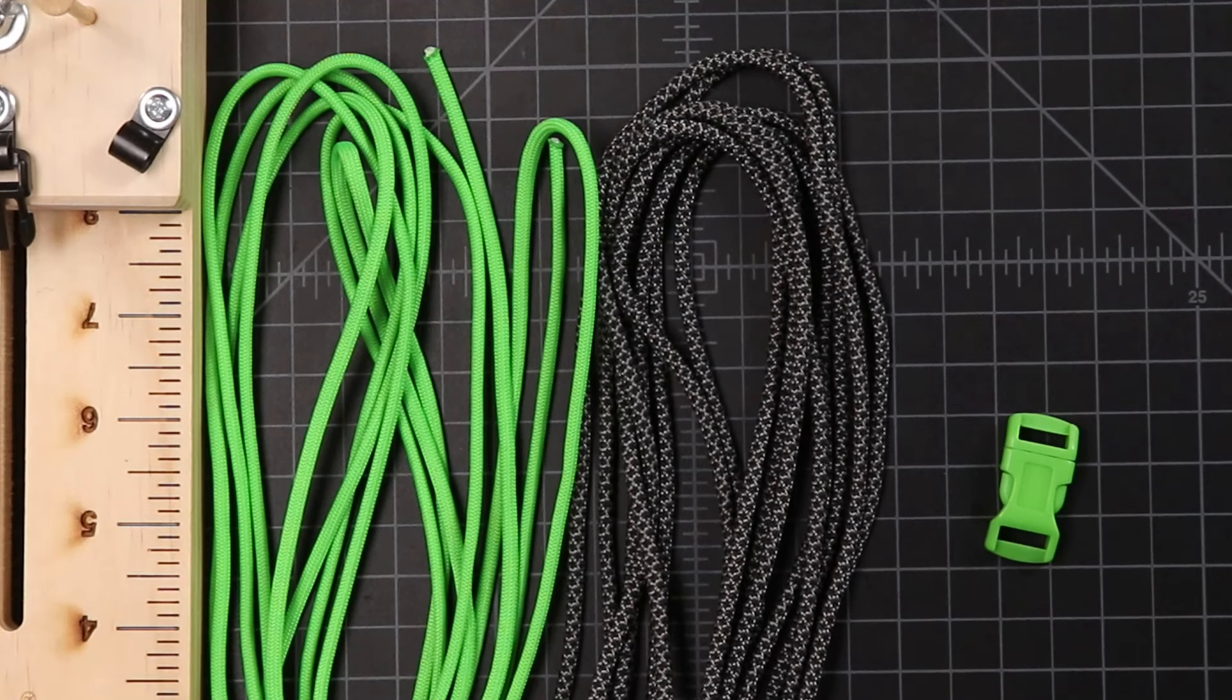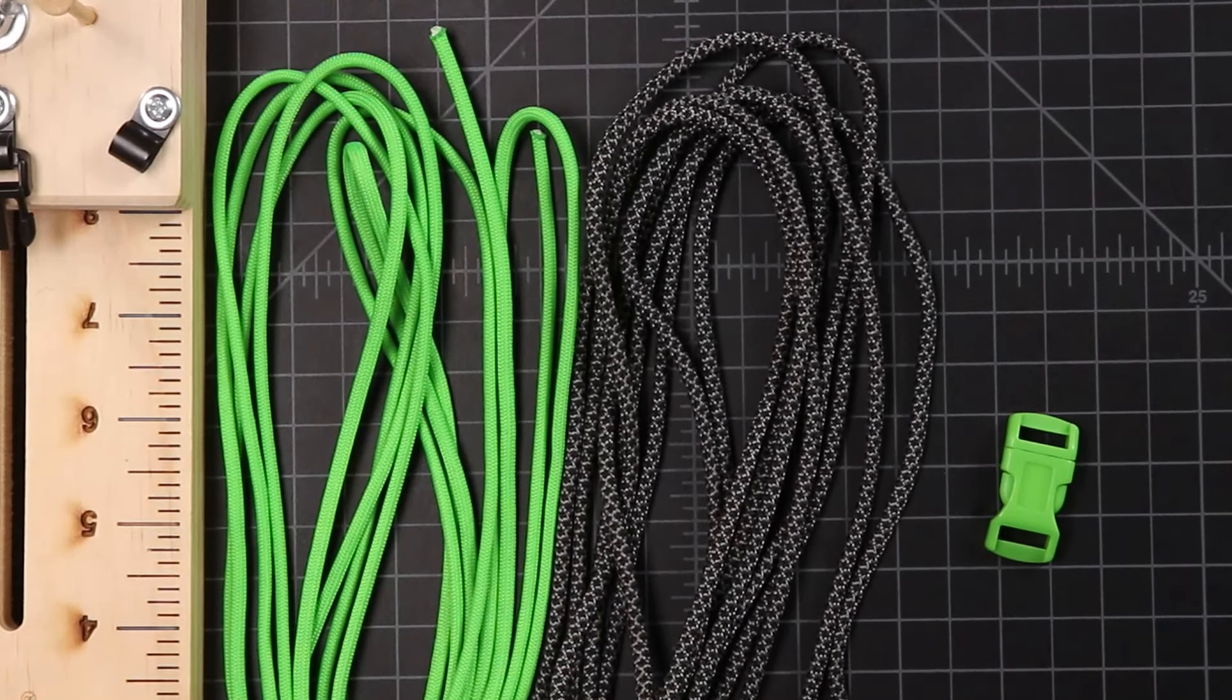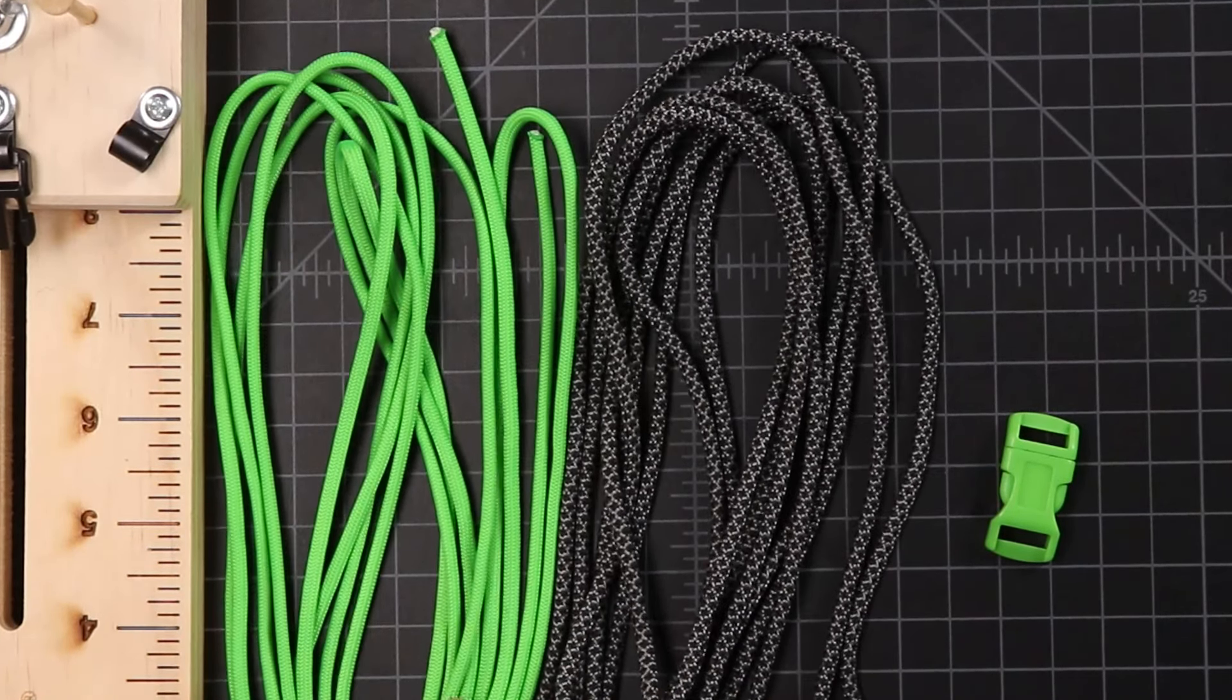For this project you're going to need about twice as much paracord as you would for a normal cobra bracelet. I calculated it out to be about one foot of cord per color makes one inch of weave. So that's two feet total per inch of weave. So I've got regular old green here, and then a black and charcoal diamonds color, and a half inch buckle.